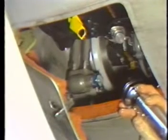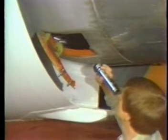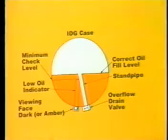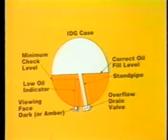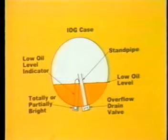Use a flashlight to illuminate the low oil level indicator. Look at the indicator and change your angle of vision until you see the white marks exactly align — you are now in the correct viewing position. If the indicator is totally dark or amber, it indicates oil is visible over the entire viewing area and the IDG has a sufficient amount of oil; replenishment is not required. If the indicator appears totally or partially bright near the center, there is not enough oil to cover the viewing area, and the oil level must be replenished.